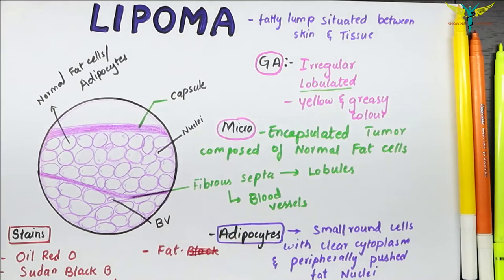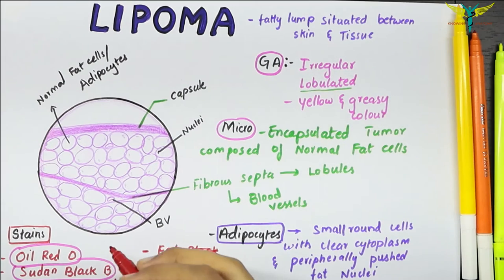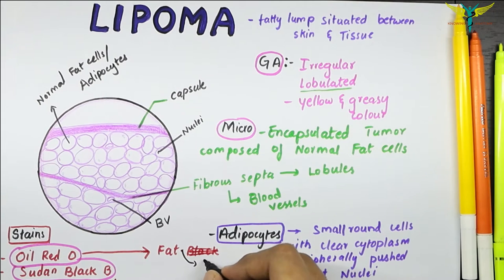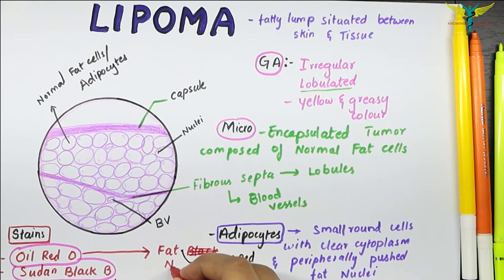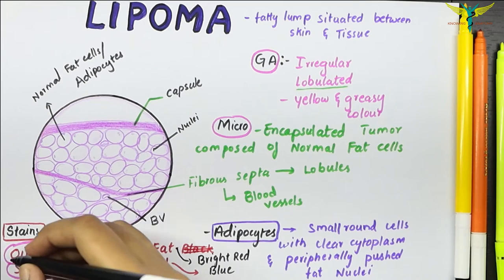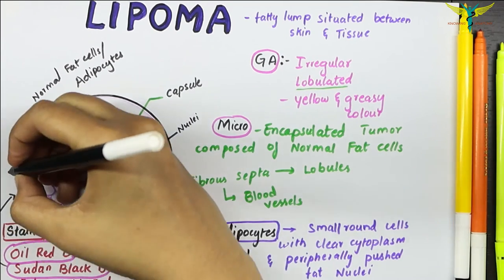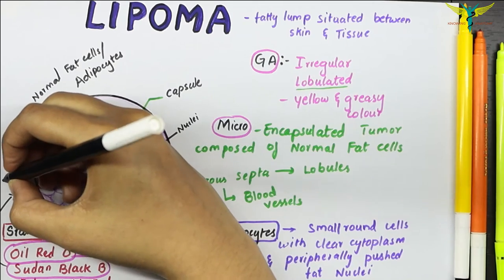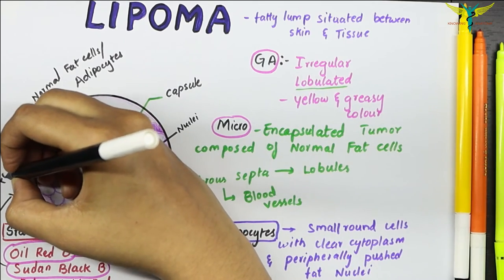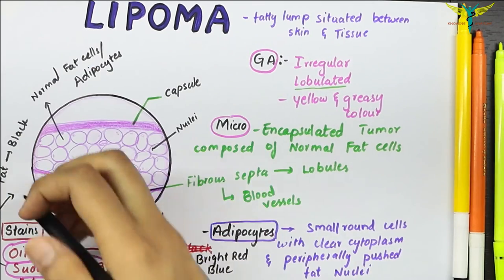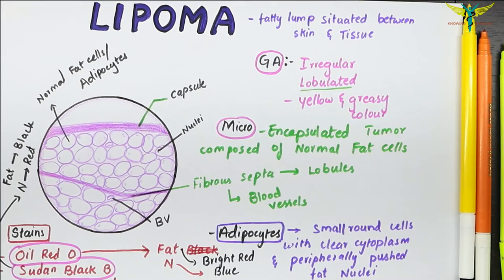The stains used for lipoma are Oil Red O and Sudan Black B. Oil Red O stains the fat bright red and the nucleus blue. Sudan Black B stains the fat black and the nucleus red. These two are the special stains used for lipoma.